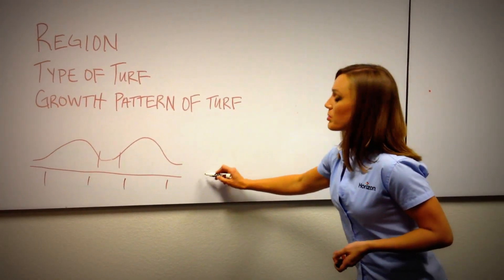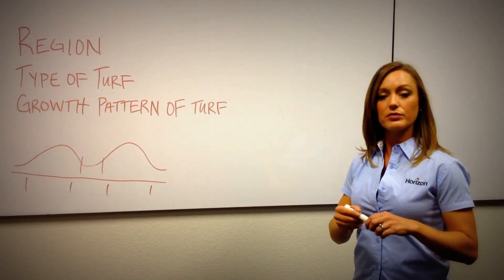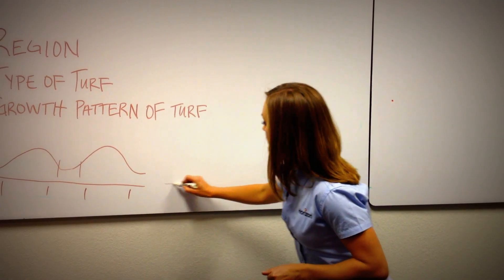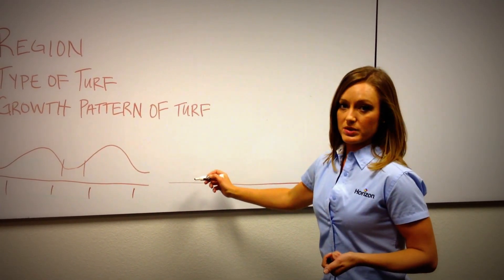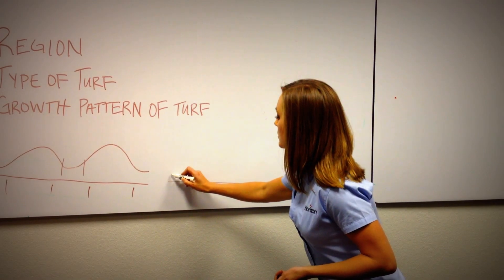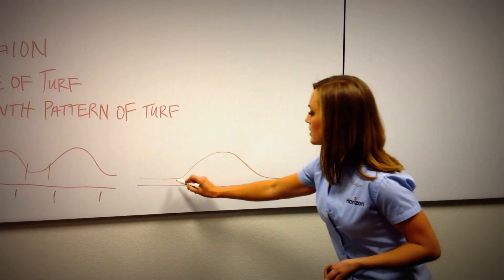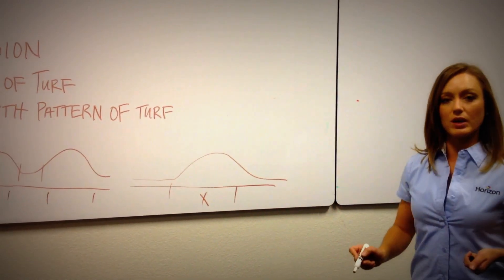Whereas warm season grasses, bermudagrass, zoysiagrass, St. Augustine, you think of warm places like Florida or Arizona, southern parts of California, Texas. These are grasses that go dormant in the winter time oftentimes. So if you see grass that in the winter is yellowed out, they're primarily grown in the spring to summer. So it's that spring to summer window that are the best times to fertilize warm season grass.